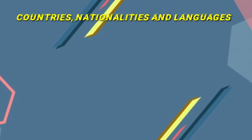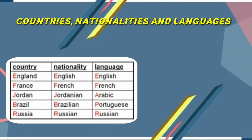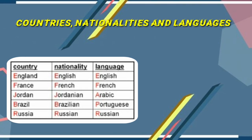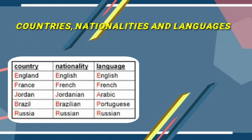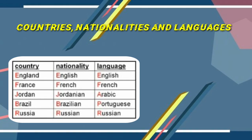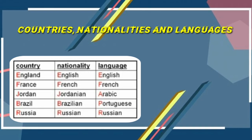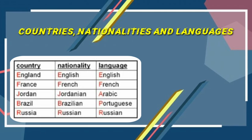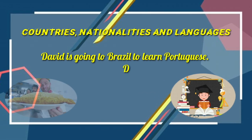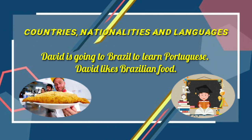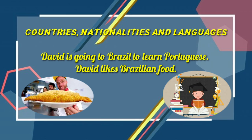Rule five: countries, nationalities, and languages. The first letter of all countries, nationalities, and languages is a capital letter. For example, England — nationality English, language English. France — French. India — Hindi. Brazil — Brazilian, language Portuguese. Example: 'David is going to Brazil to learn Portuguese. David likes Brazilian food.' So Brazil, Portuguese, and Brazilian all have capital letters.